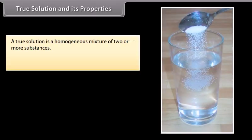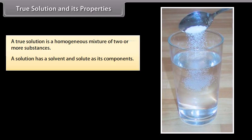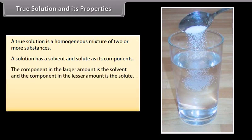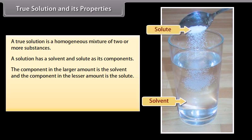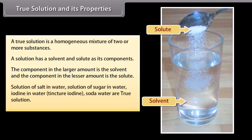True solution and its properties. A true solution is a homogeneous mixture of two or more substances. A solution has a solvent and a solute as its components. The component in the larger amount is the solvent, and the component in the lesser amount is the solute. Examples of true solutions: solution of salt in water, solution of sugar in water, iodine in water, tincture iodine, and soda water.